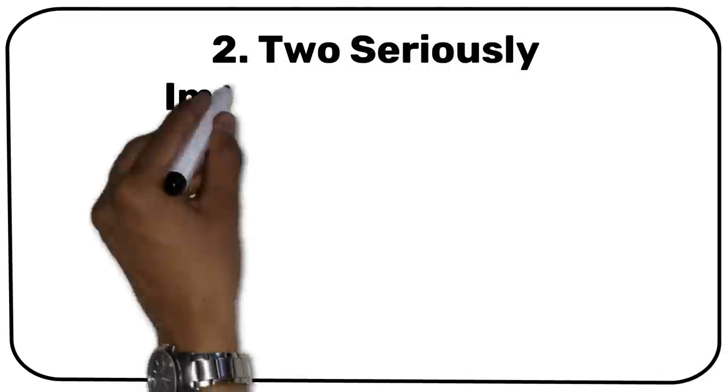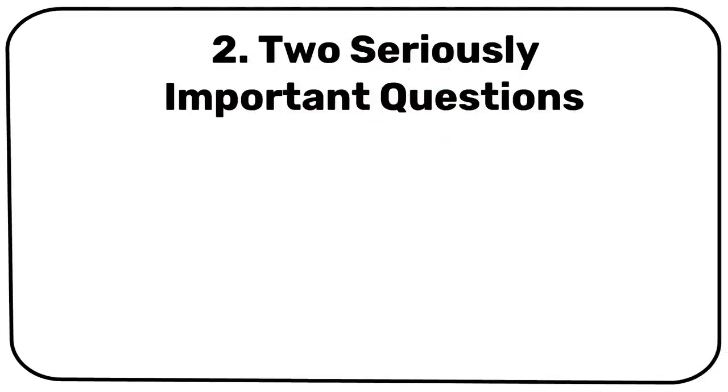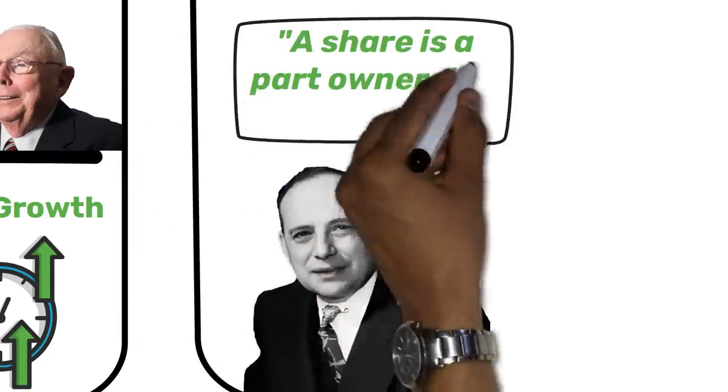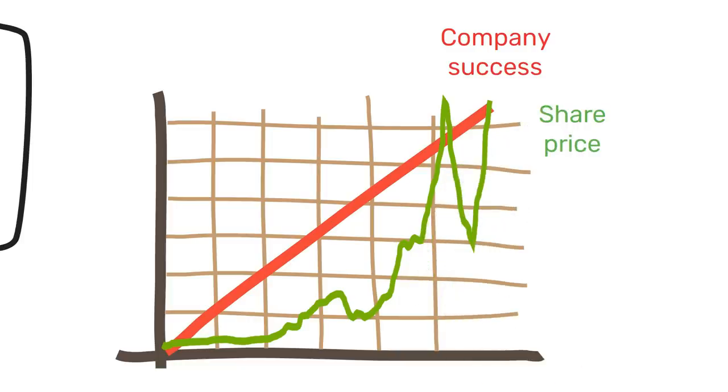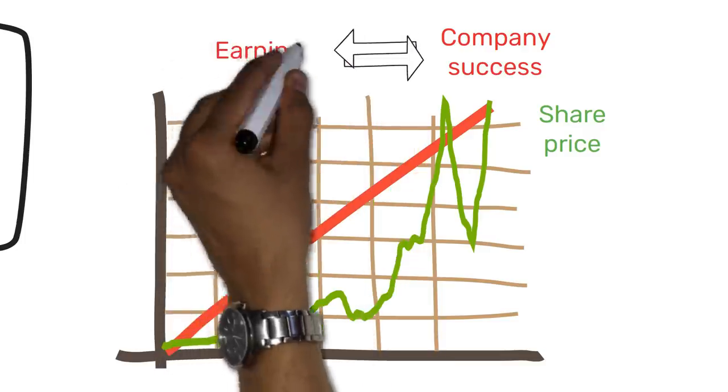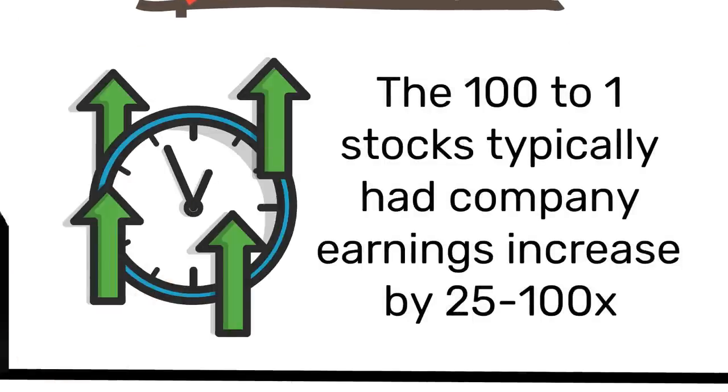Takeaway number 2, 2 seriously important questions. The father of value investing Benjamin Graham taught us that a share is a part ownership of a business. Over time, the price of a share will follow the success of the company that it represents. And of course, business success as we know it today is producing as much earnings as possible for shareholders. The 100 to 1 companies typically increase their earnings by something like 25 to 100 times over the course of a long period.